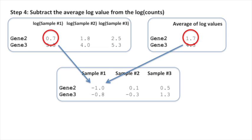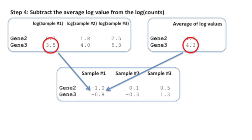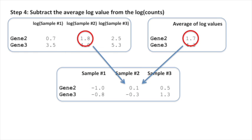For gene number 3 in sample number 1, we subtract 4.3 from 3.5. That gives us negative 0.8. And we just do the same thing for all the other genes.